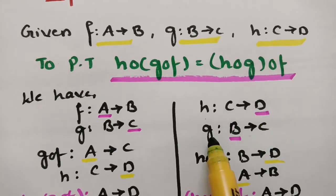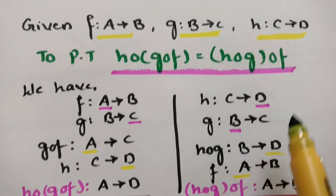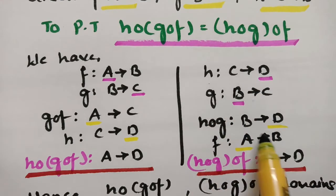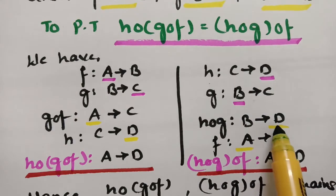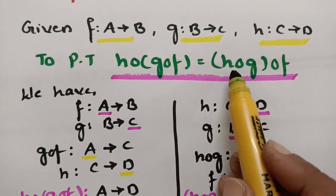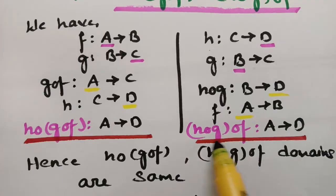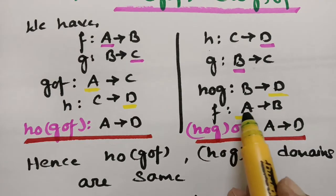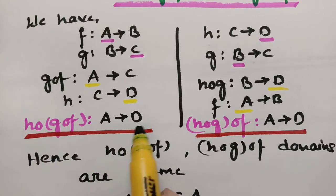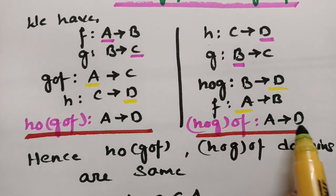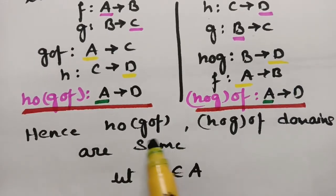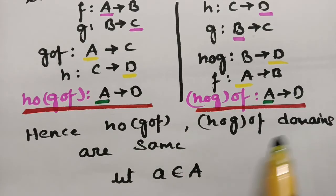For the other side: H maps from C to D, G maps from B to C, and H∘G maps from B to D. Then F maps from A to B, so (H∘G)∘F maps from A to D. Therefore H∘(G∘F) maps from A to D, and (H∘G)∘F maps from A to D. Both domains are equal, that is A.